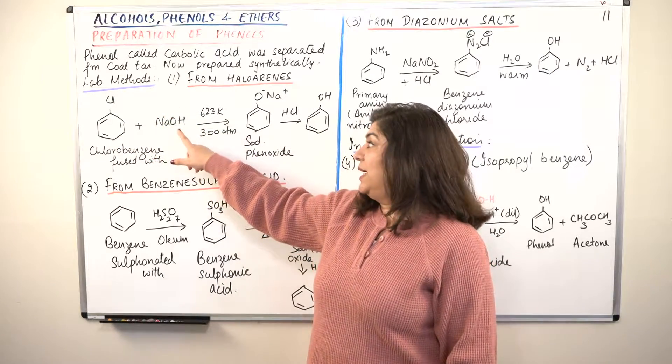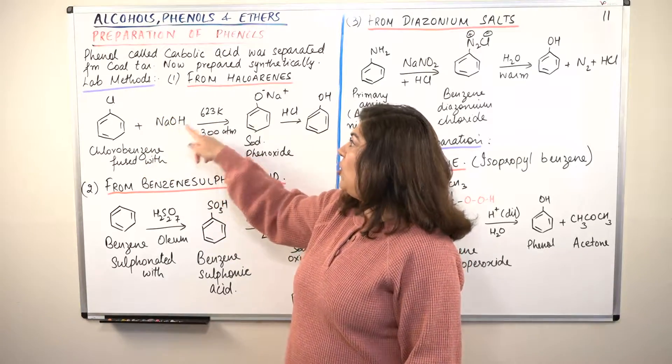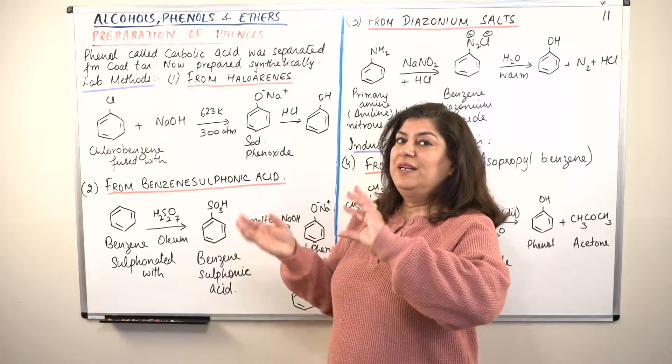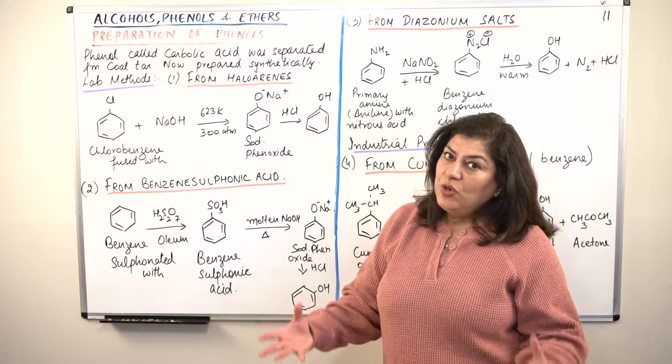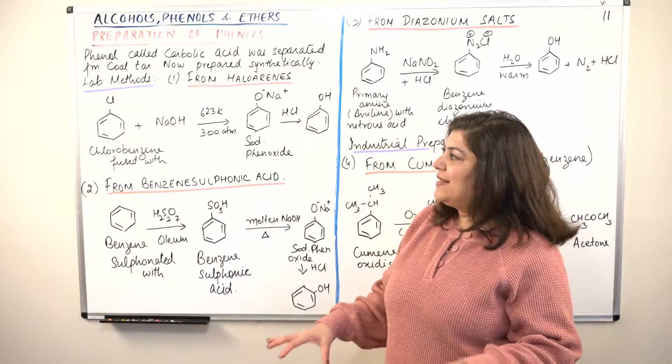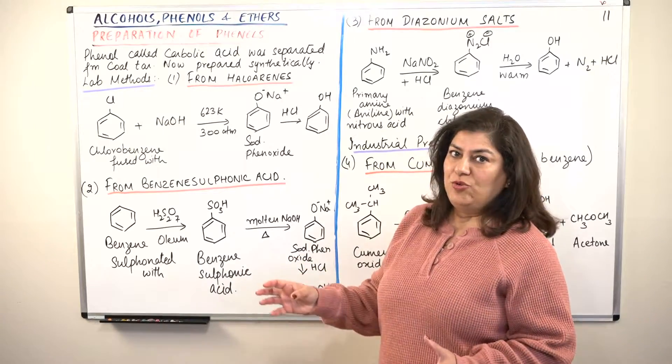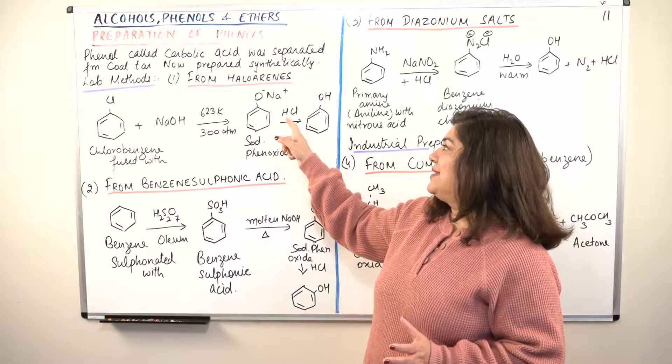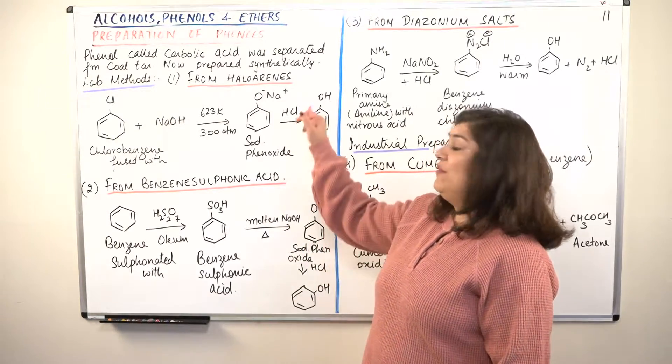Chlorobenzene is fused with sodium hydroxide. When it is fused with sodium hydroxide, the H and Cl combine and NaO - the oxygen gets attached to the benzene ring. The chlorine is switched with ONa, thus giving you sodium phenoxide. Sodium phenoxide now on acidification results in the formation of phenol. So that is the first method of preparation.